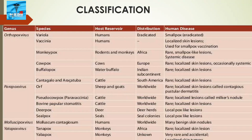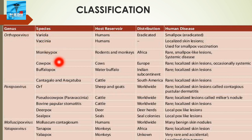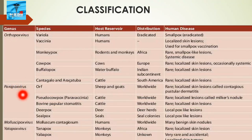Regarding classification, the important poxviruses causing human infections are depicted in the figure. In the genus orthopoxvirus, variola, monkeypox, cowpox, and buffalopox are very important. In parapoxvirus, the species orf and pseudocowpox have considerable clinical importance.